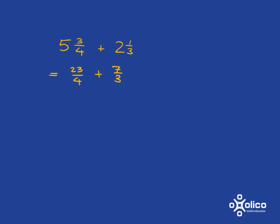Hopefully by now it will be really quick for you to see that your common denominator here has to be 12. Because we've multiplied by 3 here we must multiply the numerator by 3 so we get 69, and here we've multiplied by 4 so we must multiply the numerator by 4 and we get 28.